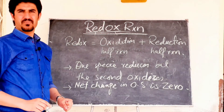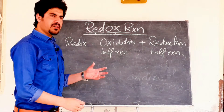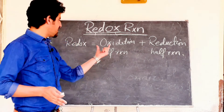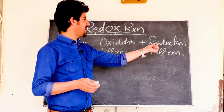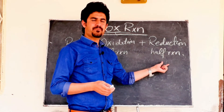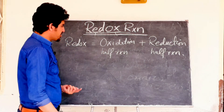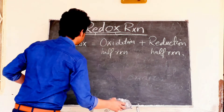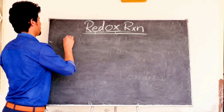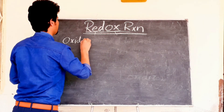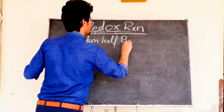Now, we say that a redox reaction as a whole is made up of two half reactions — one oxidation half reaction and one reduction half reaction. Now let's understand the oxidation half reaction and reduction half reaction.